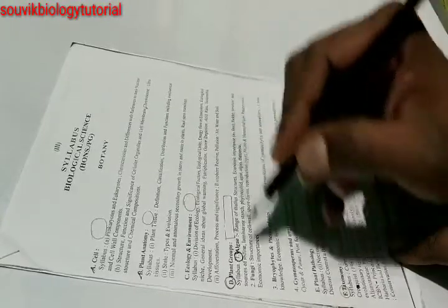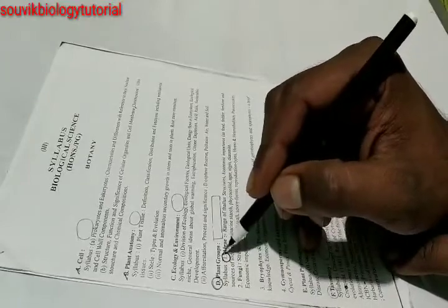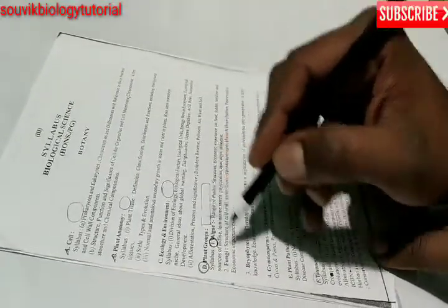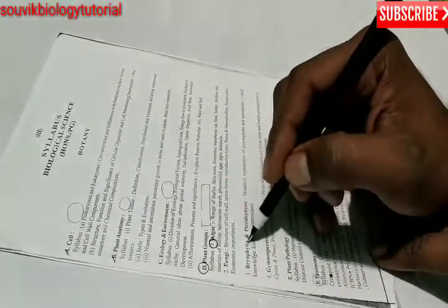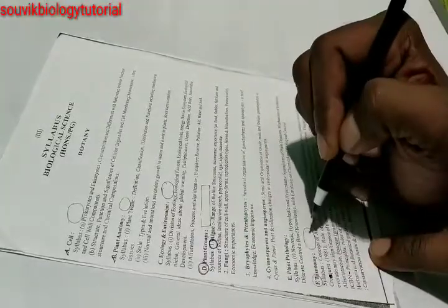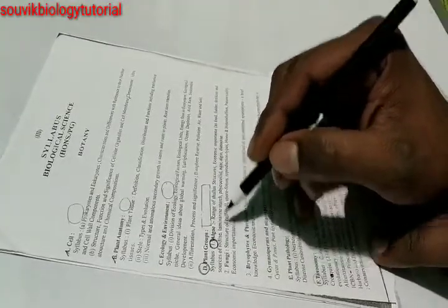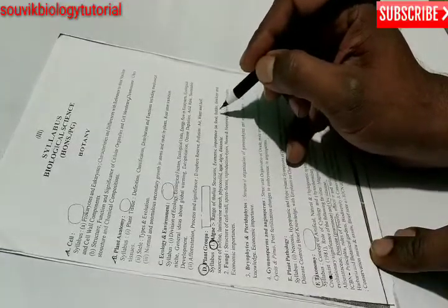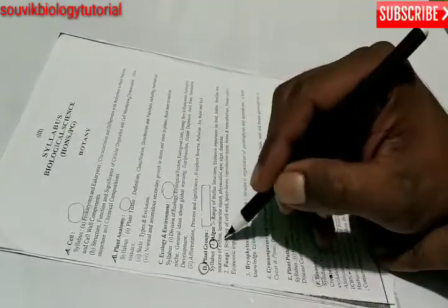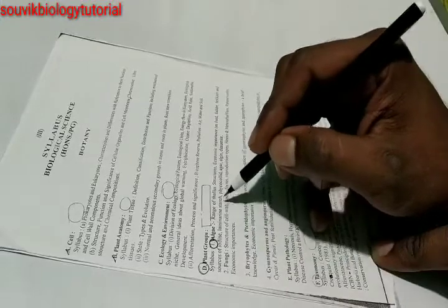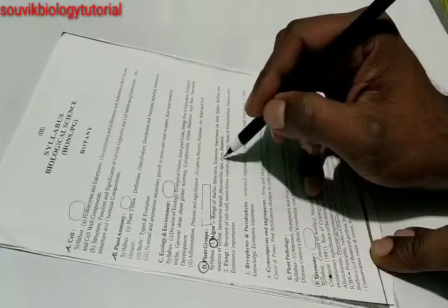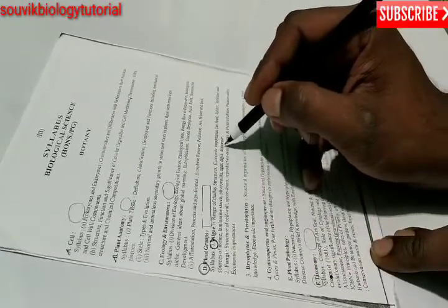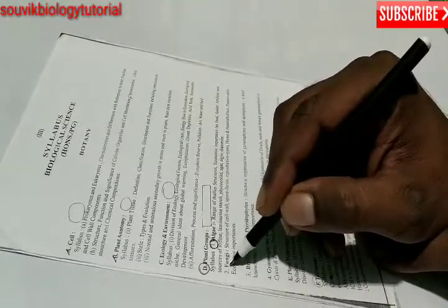Next is plant groups. This is very very important chapter which includes algae, fungi, bryophytes, pteridophytes, gymnosperms and angiosperms. From algae you have to study range of thallus structures, economic importance as fodder, food, fertilizer and sources of iodine, laminarine starch, phycocolloid, agar, algine and diatomite. Next is fungi. From fungi you have to study structure of cell wall, spore forms, reproduction types, homo and heterothalism, parasexuality and economic importance.